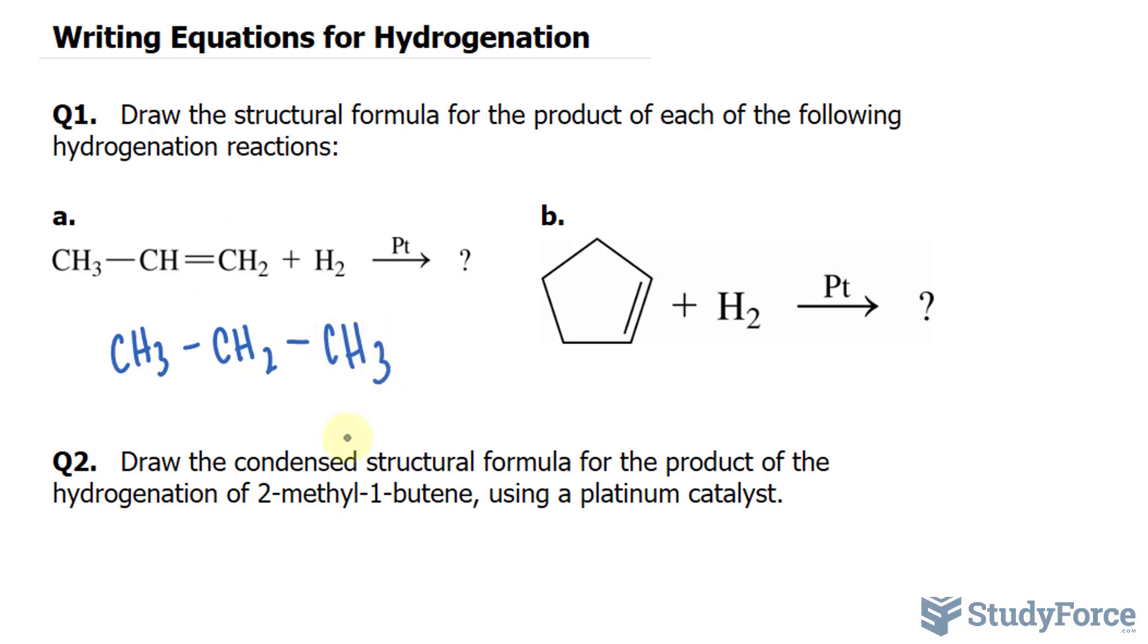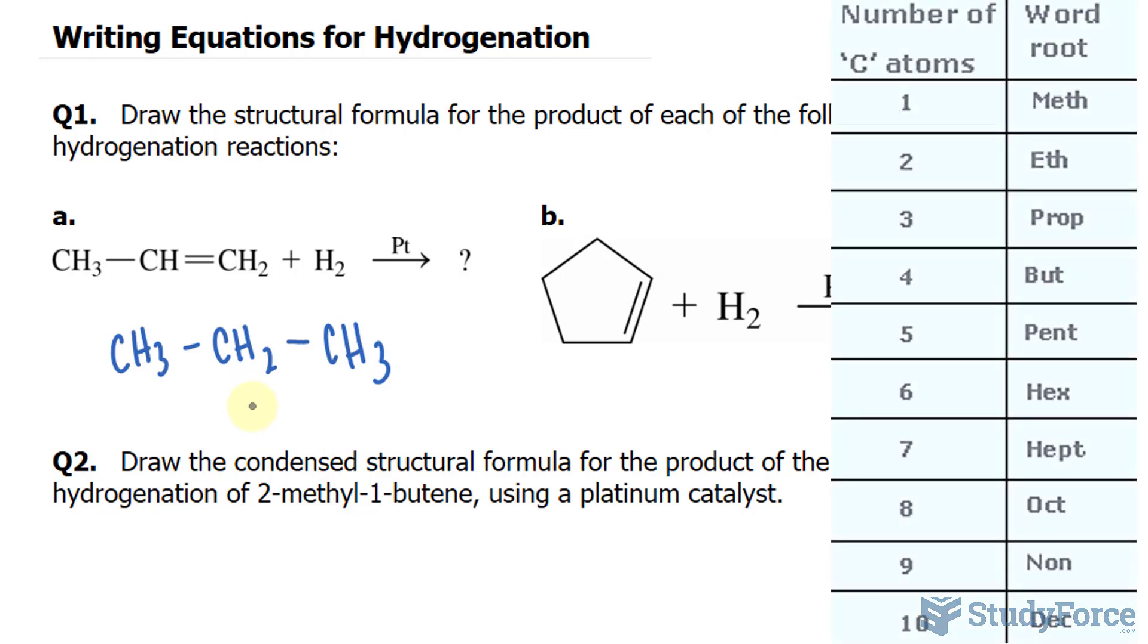So we have a three carbon chain. Specifically, this alkane is called propane. Whenever you have three carbons, you have the prefix PROP followed by ANE.